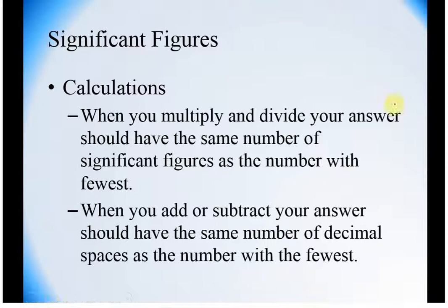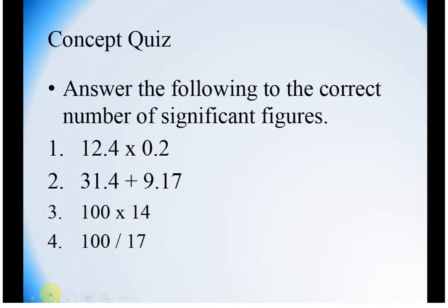In calculations, if you are going to multiply and divide, your answer needs to have the same number of sig figs as the number with the fewest. You can't add numbers for anything. You just need to use the least specific as your guide. When you are adding and subtracting, you should have the same number of decimal spaces as the number with the fewest. The sample questions that I included, the test questions from previous semesters, have some great challenge questions for you.